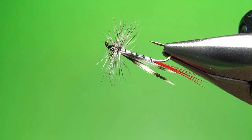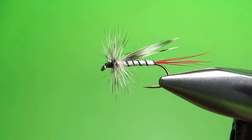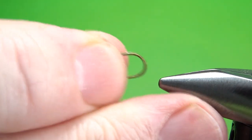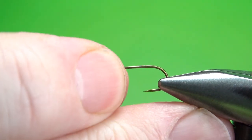So there's one in the vise, a Red-tailed Mosquito. Pretty simple pattern, but pretty cool looking. I'm going to tie this on a size 12 standard length dry fly hook.